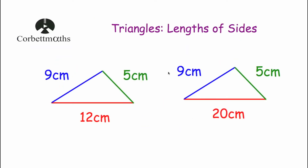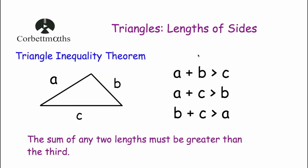What we've just found out is that the length of the third side of a triangle has to be less than the sum of the other two sides. This gives us what's called the triangle inequality theorem. It's really common sense — you can't have a side that's far too big. It states that a + b must be greater than c, a + c must be greater than b, and b + c must be greater than a. In other words, the sum of any two sides must be greater than the third side.